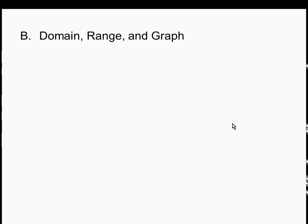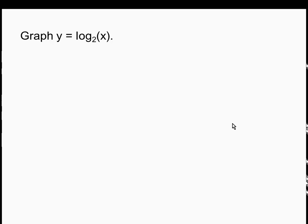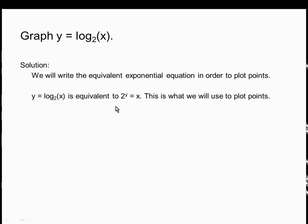Let's look at the domain, range, and graph. These are the inverses of the exponential functions. Since all exponential functions basically look the same when a is bigger than 1, all log function graphs will look the same when a is bigger than 1. We'll graph y = log base 2 of x by writing the equivalent exponential equation to plot points: y = log base 2 of x is equivalent to 2 to the y = x. This equation is solved for x, so we pick y and the equation gives x, but we still plot (x, y).